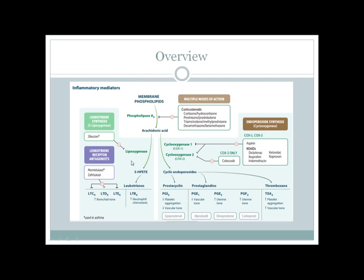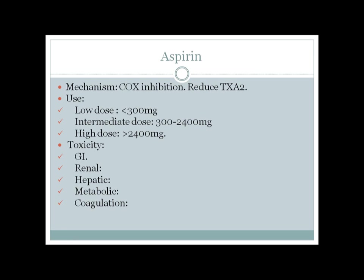In the lipoxygenase pathway, we can inhibit the lipoxygenase enzyme itself with zileuton, or inhibit the receptors of LTC4, D4, and E4 with zafirlukast. These leukotriene receptor antagonist drugs are very important in asthma, as they inhibit bronchoconstriction by blocking the binding of leukotrienes to their receptors.